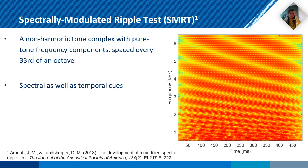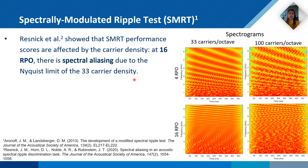We also have the spectrally modulated ripple test, SMRT, which consists of pure tone frequency components spaced every 1/3rd of an octave — that's the carrier density. This test has both spectral cues and temporal cues, as the ripples change over time. This is the spectrogram of the sound. Unfortunately, the use of the 1/3 carrier density was too low, and as a result, at 16 RPO we had spectral aliasing happening. To overcome this issue, they increased the carrier density, and as you can see, the spectral aliasing is no longer present.